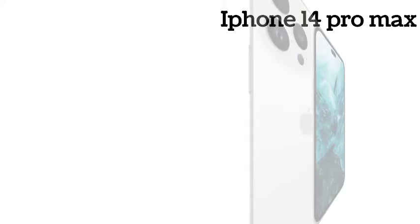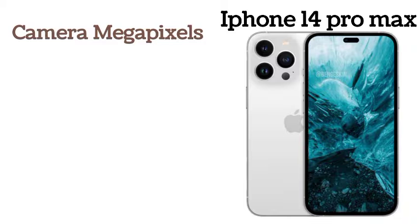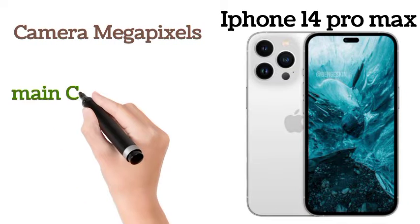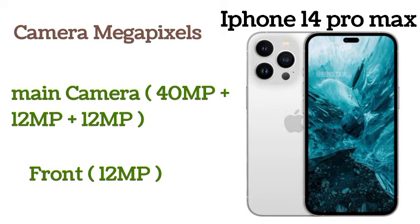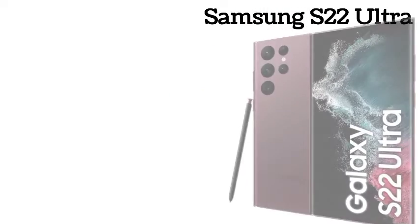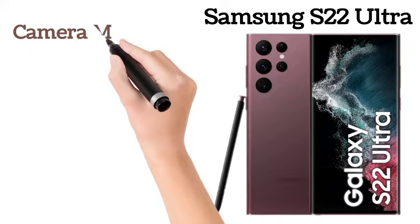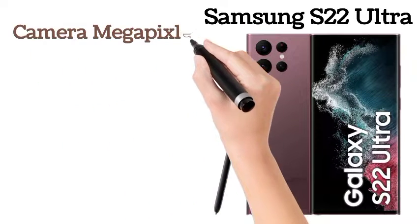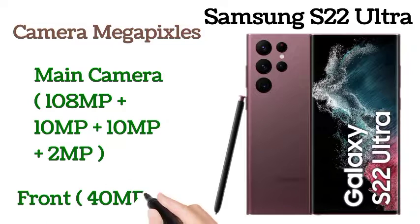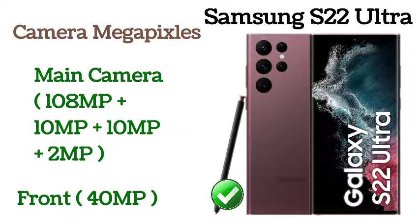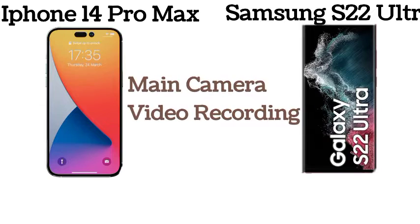Now let's do a camera comparison of both phones. The iPhone 14 Pro Max main camera has a quad camera setup of 48MP plus 12MP plus 12MP, and its front camera is 12MP. The Samsung S22 Ultra main camera has a quad camera setup of 108MP plus 10MP plus 10MP plus 2MP, and its front camera is 14MP.